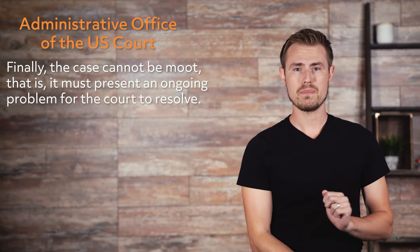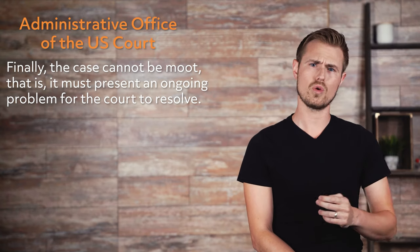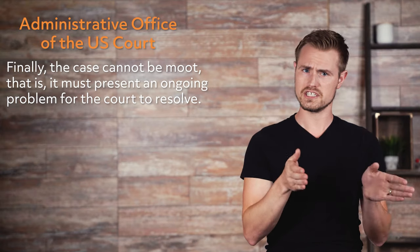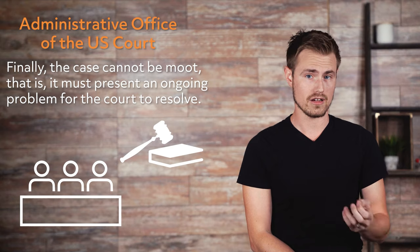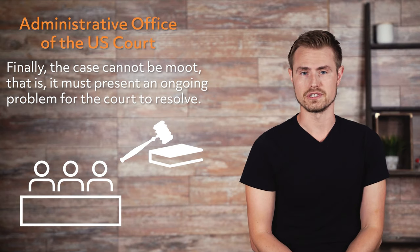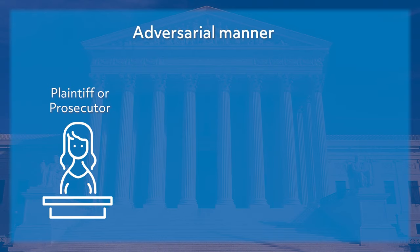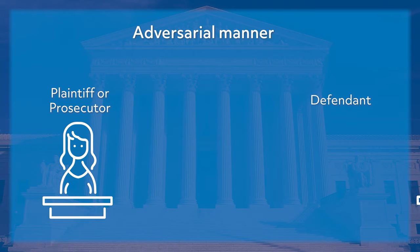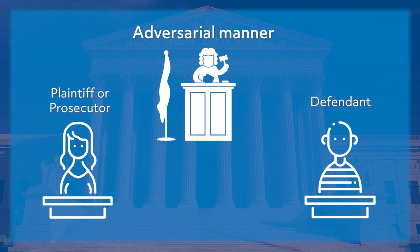Finally, the case cannot be moot — it must present an ongoing problem for the court to resolve. The federal courts are thus courts of limited jurisdiction because they may only decide certain types of cases as provided by Congress or as identified in the Constitution. When cases are brought before a court, they are done so in an adversarial manner, meaning the plaintiff or prosecutor and the defendant present their facts and story to a neutral third party — the judge. The two parties are responsible for doing whatever they legally can to make their best case.